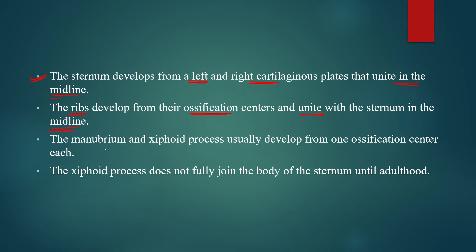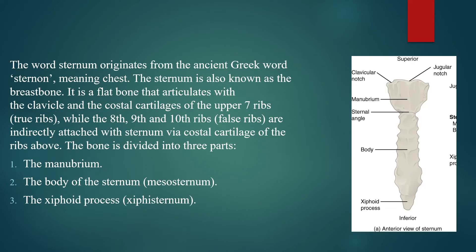The manubrium and xiphoid process — the most superior and inferior parts — usually develop from their own ossification centers. The xiphoid process does not fully join the body of the sternum until adulthood; it is not fully joined until around 18 years of age. So near around 18 years, the xiphoid process joins the body of the sternum.